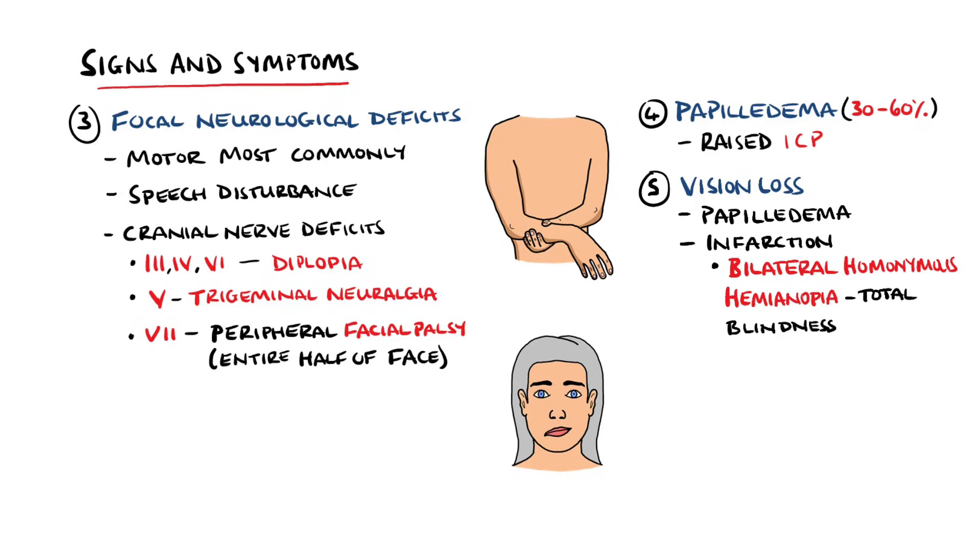which most commonly is a bilateral homonymous hemianopia, which may manifest as total blindness. This, in most cases, is somewhat reversible.